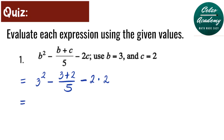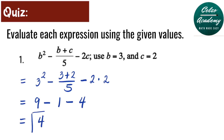Simplifying this: 3 squared equals 9. Minus: 3 plus 2 is 5, and 5 divided by 5 is 1. Minus: 2 times 2 is 4. Simplifying further from left to right: 9 minus 1 is 8, and 8 minus 4 is 4. So the answer for this problem is 4.